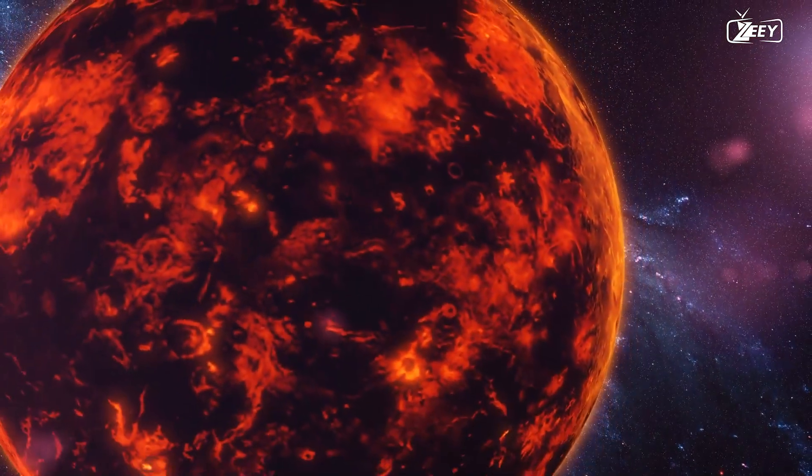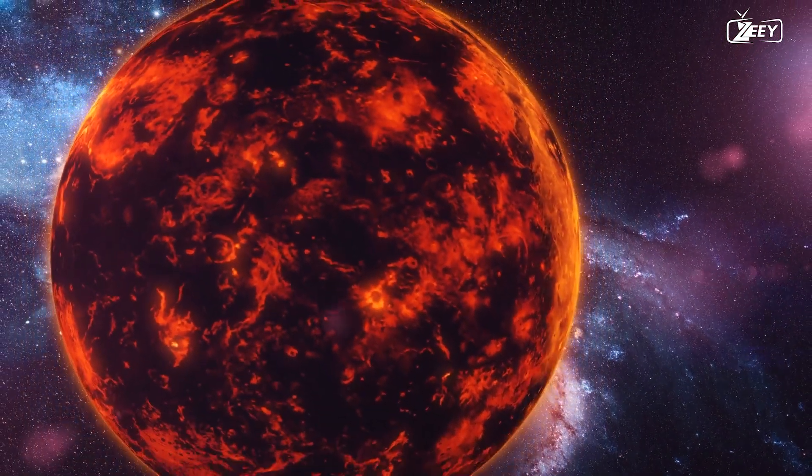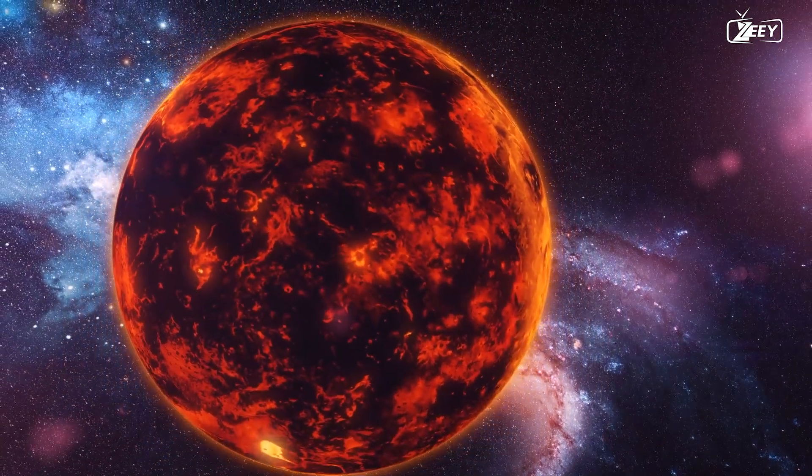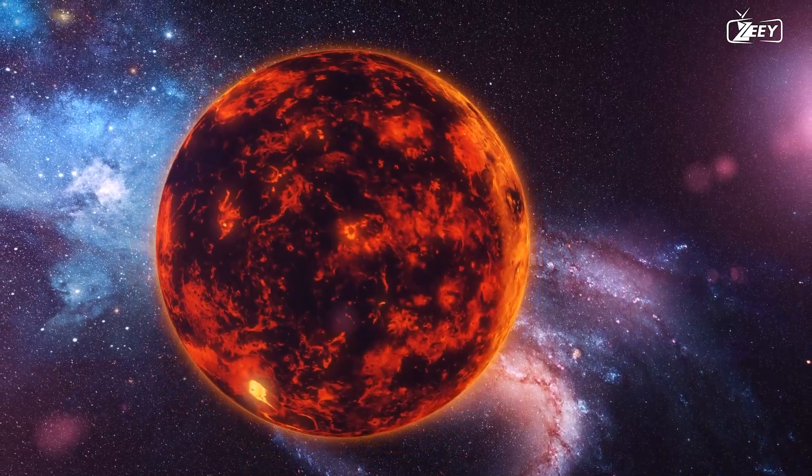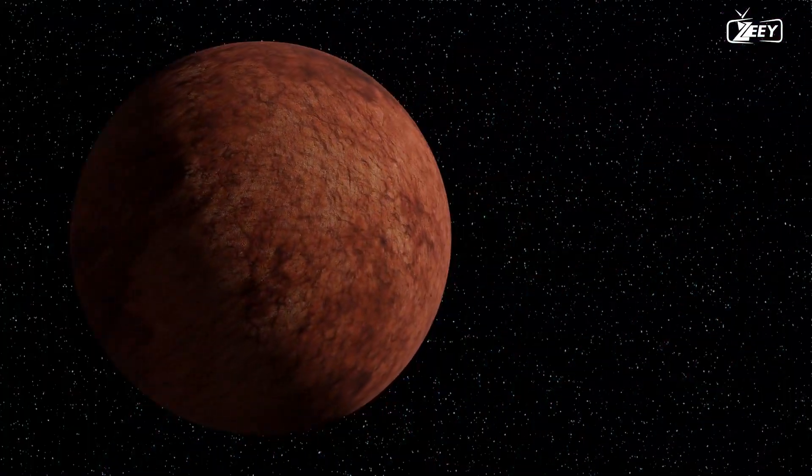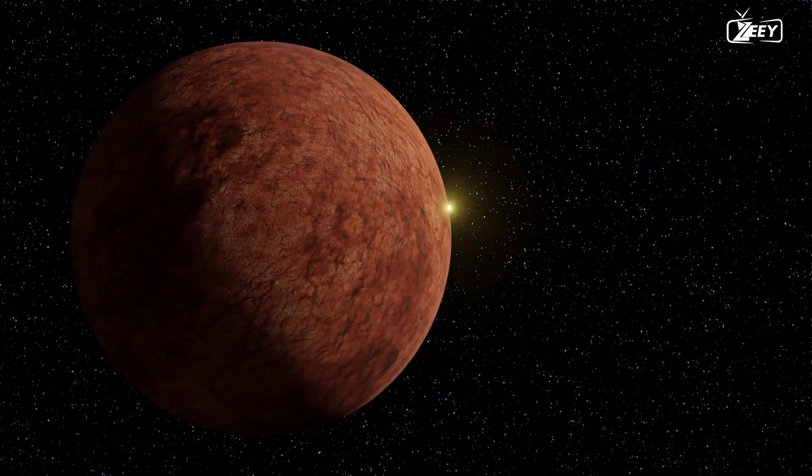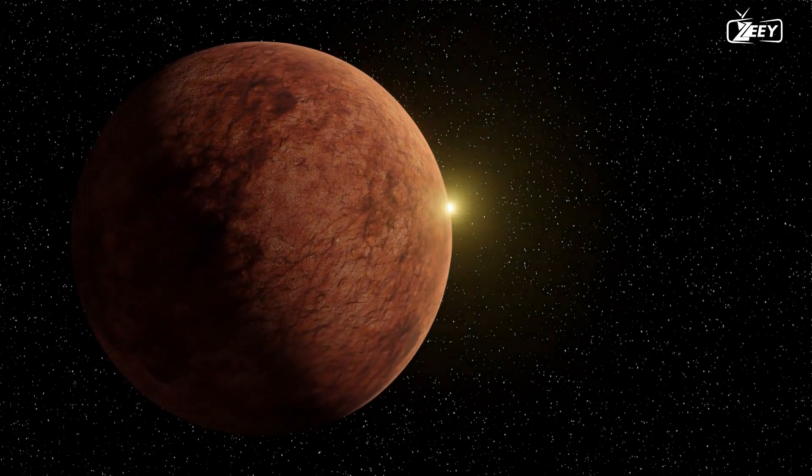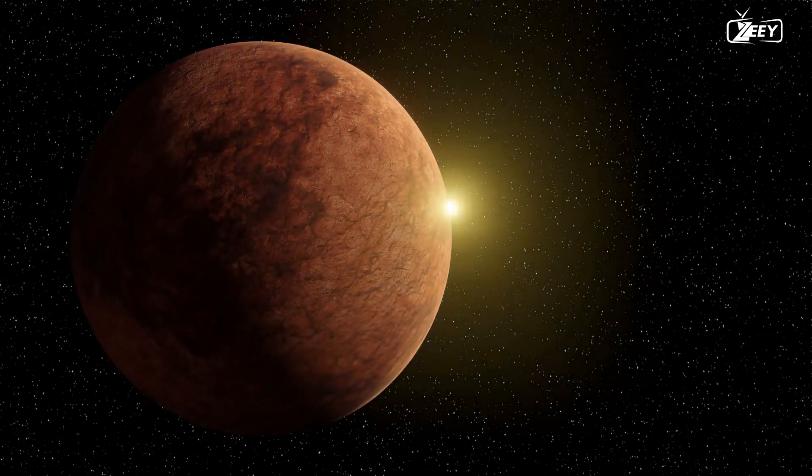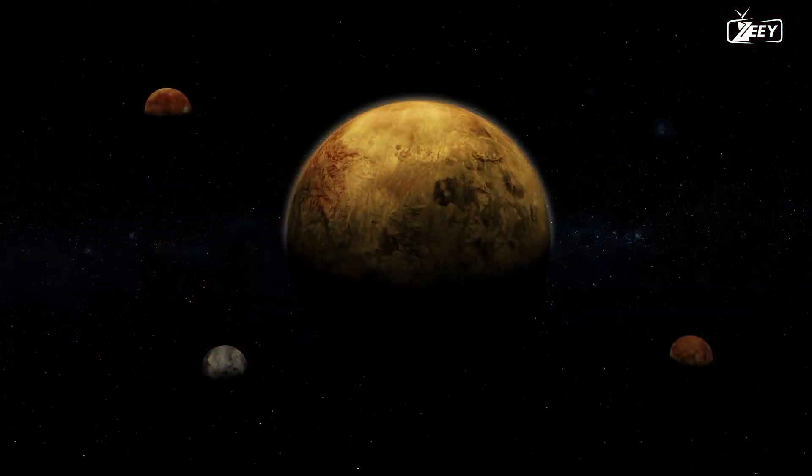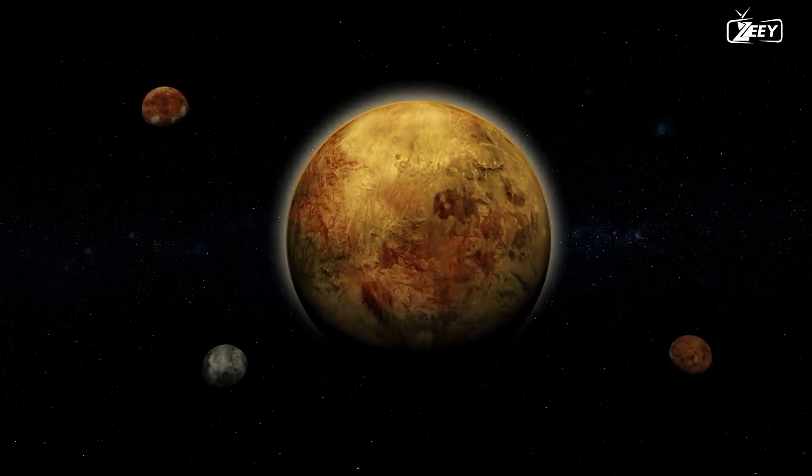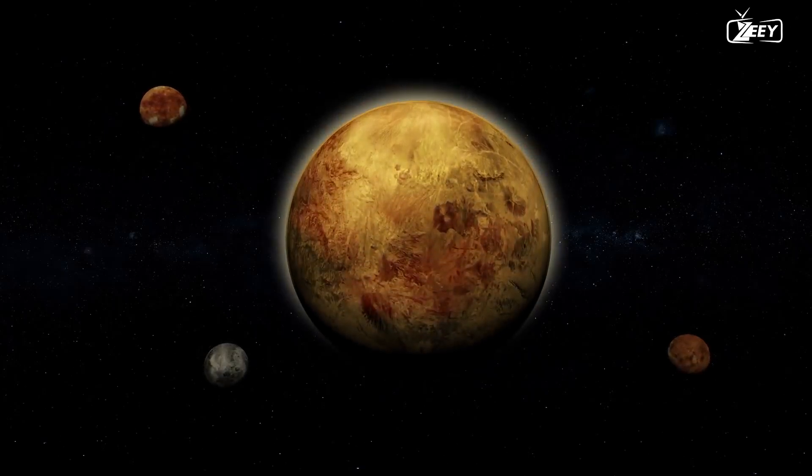Regrettably, subsequent research revealed that the majority of the planets discovered in the habitable zone are failures and that they cannot support life. For instance, Gliese 582c, the first super-Earth discovered in the habitable zone, was one of the most promising planets. Yet it was eventually discovered that this planet had harsh surface conditions, perhaps resembling Venus.